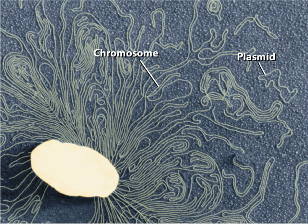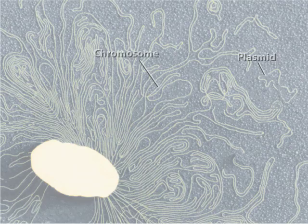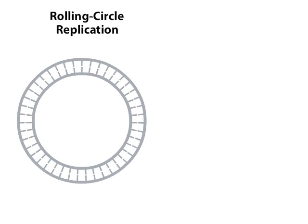For many plasmids, replication is not tied to chromosomal replication. Many plasmids replicate autonomously by a method called rolling circle replication.